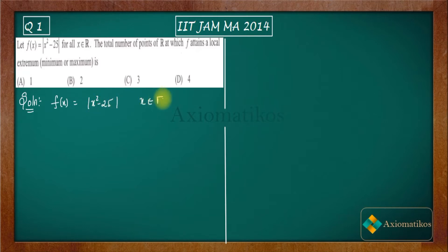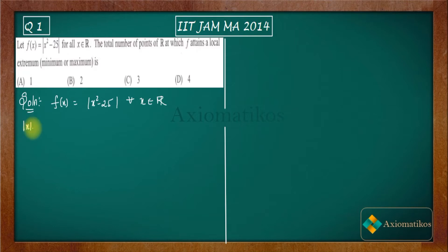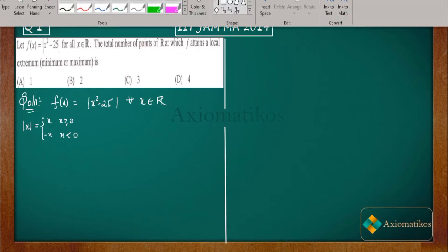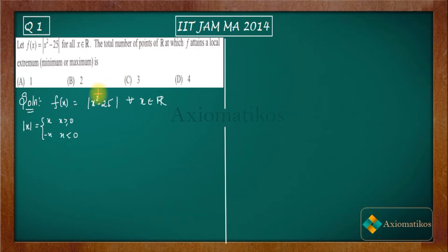We have this function f(x) = |x² - 25| for all x belonging to ℝ. This is a modulus function. The modulus function is defined as: |x| = x when x ≥ 0, and |x| = -x when x < 0. We can define the same thing for f(x), since f(x) is itself a modulus function.